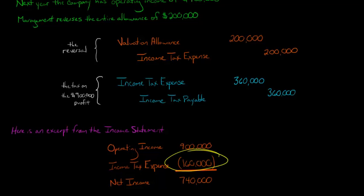The bottom line is, by doing this reversal, if we had not set up the deferred tax asset valuation allowance to begin with, then we would have $360,000 of tax expense here. So then we'd have $540,000 of net income instead of $740,000. So by setting up the valuation allowance and then later reversing it the next year, what we did was we had a bigger loss last year than we would have had we not set up the valuation allowance. But this year, we had higher net income than have we not done all that.